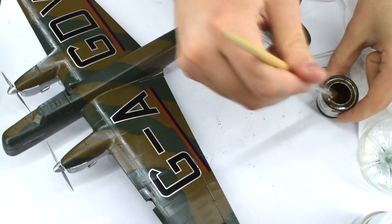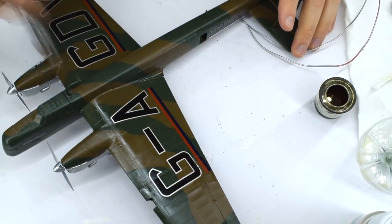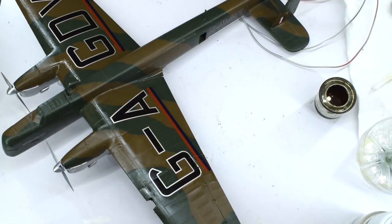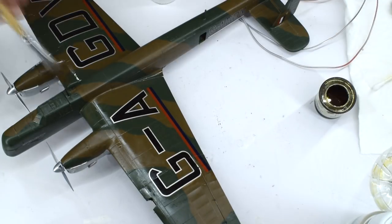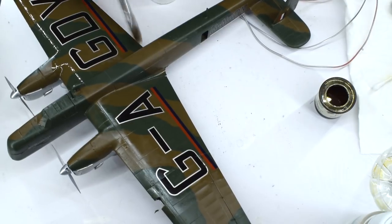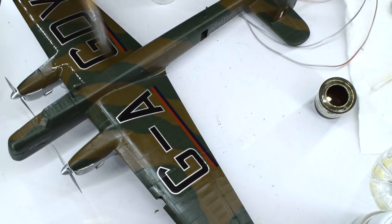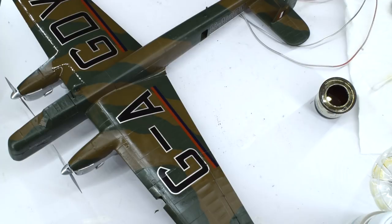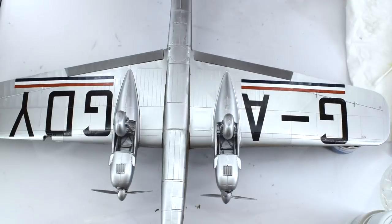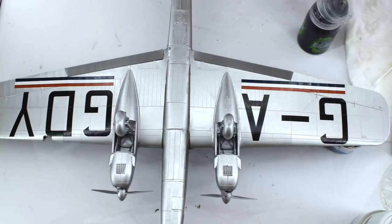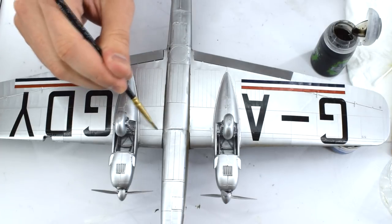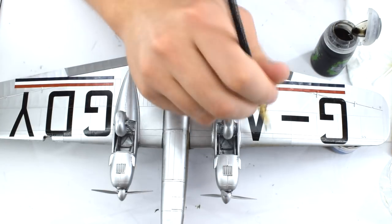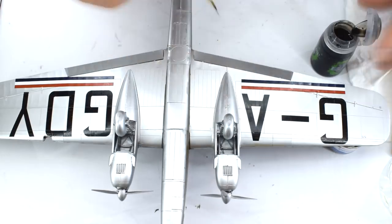With the decals now dry, Humbrol 49 Matte Varnish Enamel Paint was applied to the top surface, whilst 135 Satin Varnish was painted on the lower silver surface. These layers will help protect the decals in the next few steps. I used matte on the top surface to give it a more dull look, whilst satin on the lower to preserve the shine of the silver. Next, Citadel Nun Oil Acrylic Wash was applied to the model. I had to make sure some of the decals were cut in places, to conform to the moulded details, such as on the ailerons. The wash was then brushed over the model, with the intention that it would collect in the panel lines and recessed details.